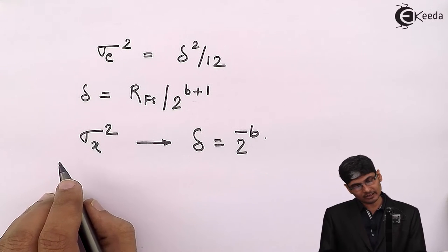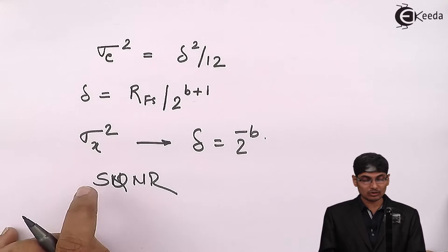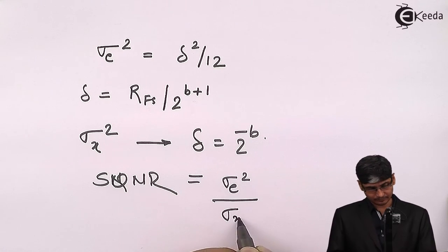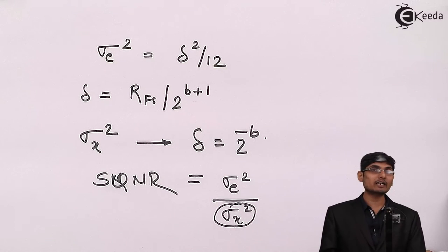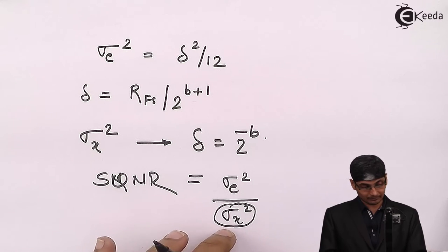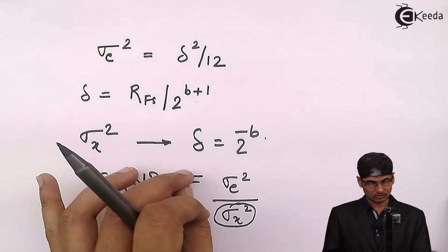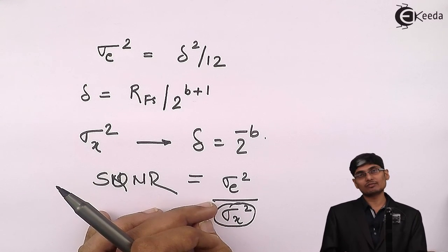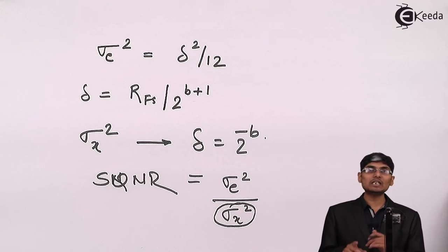For a fixed SQNR — signal to quantization noise ratio — which is sigma e squared divided by sigma x squared, a reduction in the variance or standard deviation of the input means the number of bits will also be reduced. So if I have a fixed SNR, I can reduce the number of bits by changing the variance of the input signal — that means changing the dynamicity of the input signal.